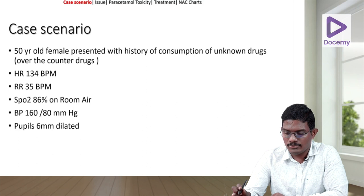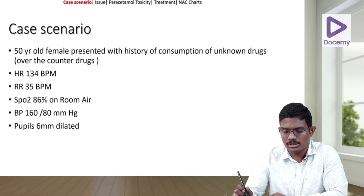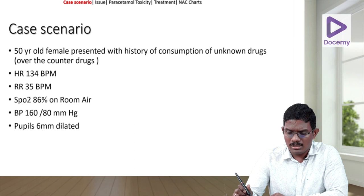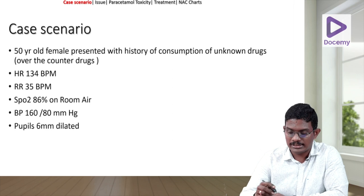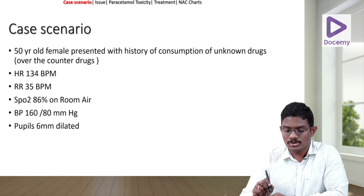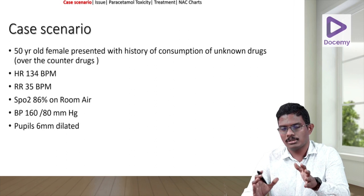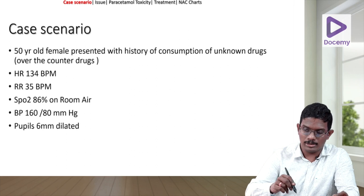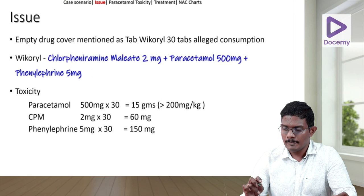We had a patient, a 50-year-old female, with a history of consumption of unknown over-the-counter drugs — she took around 30 tablets. When she came in, her heart rate was 134, respiratory rate was 35, saturation was 86% on room air, BP was 160/80, and pupils showed 6mm dilation. This was multi-drug abuse, and we had to differentiate between the drugs she had consumed.